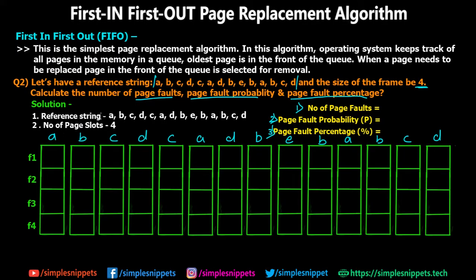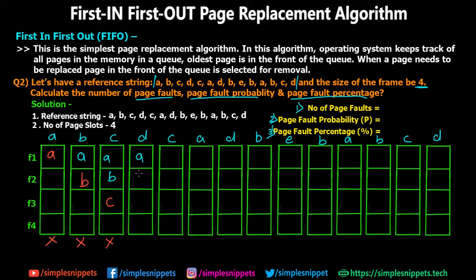Starting step one: page A is not in any frame, so a page fault is generated and A is loaded into frame F1. Step two: A is in memory but B is not, so B is loaded — another page fault. Similarly for step three, C is not there — page fault. Step four, D is not there — page fault. So the initial four steps all produce page faults as A, B, C, and D are loaded into the four frames. At step five, page C is already there, so no page fault.